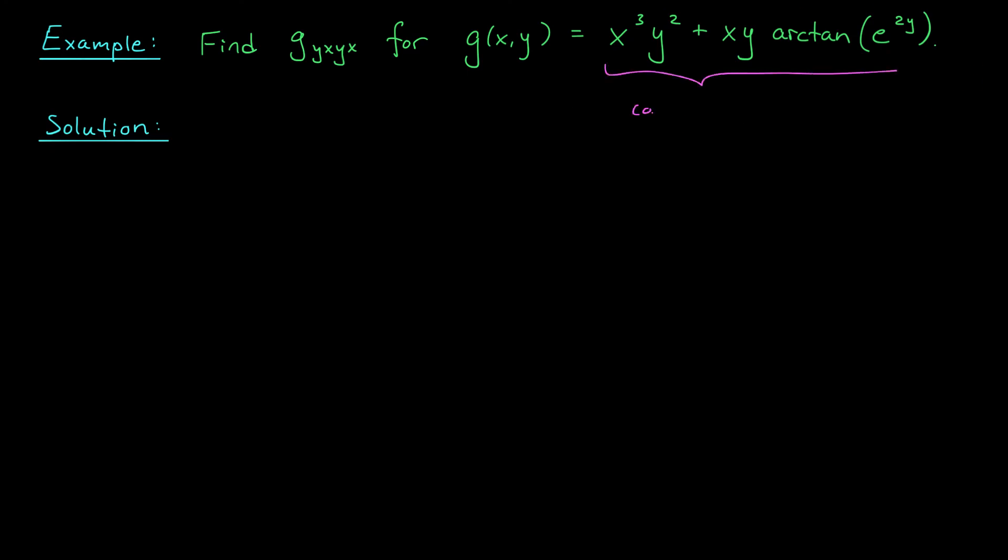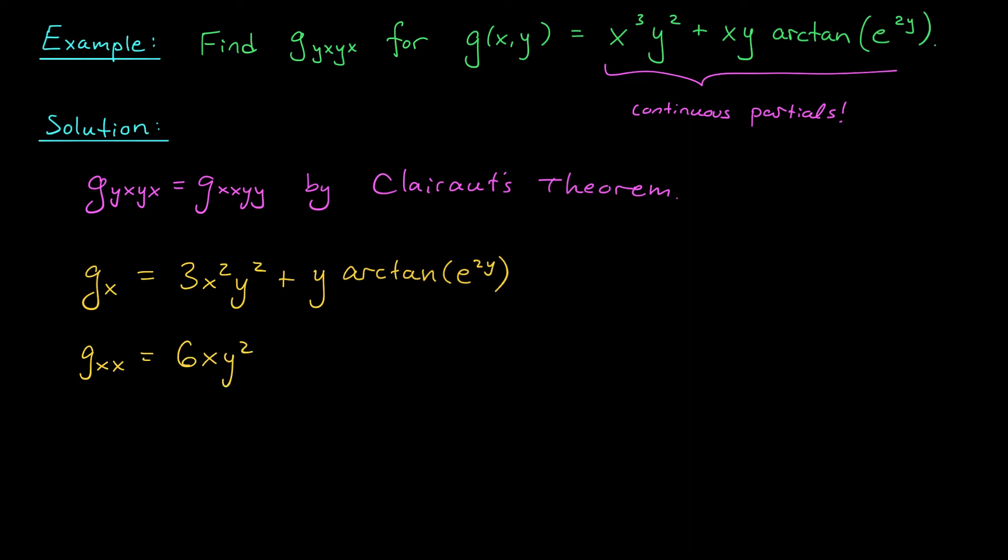I'm going to let you convince yourself that this function, g(x,y), has nice continuous partial derivatives, which means we can apply Clairot's theorem. Instead of computing gyxyx, I'm going to switch the order, which you can do even if you have more than just two partial derivatives. And I'm going to write this as gxxyy. You see, the y derivatives look like the bad ones. So I'm going to do the x derivatives first. Hopefully, those will clean up our function a little bit. If I do my first derivative with respect to x, I'm going to get 3x squared y squared. Now, this x goes away, and I'm just left with y arctan of e to the 2y. Now, I do another derivative with respect to x. Gxx is going to be 6xy squared. And then a miracle happens. This second term now has no x's. So it just goes away. We don't need to do any product rules here. It just disappears.